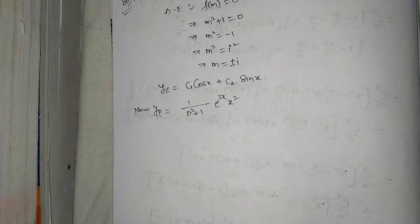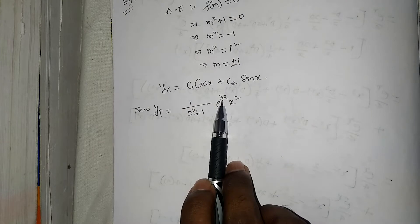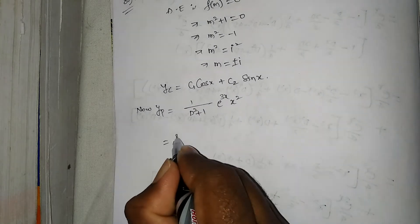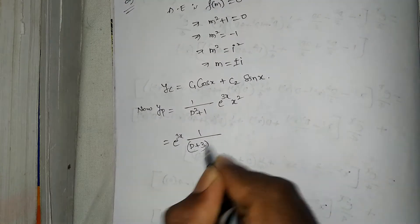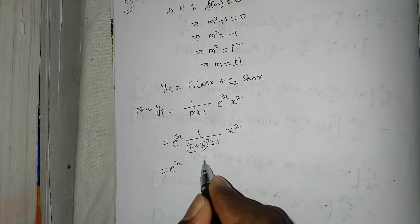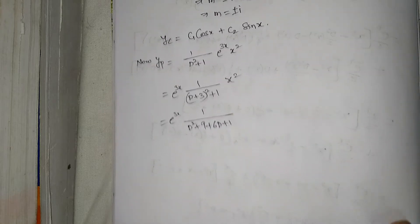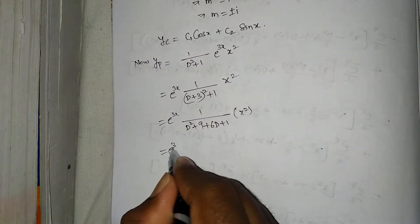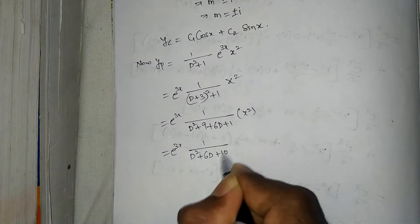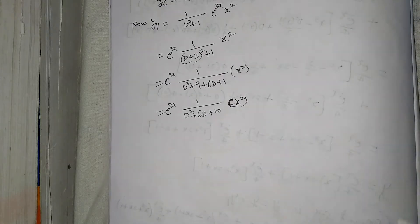Using the e^(ax)·V formula, replace D with D+3: yp = e^(3x) · 1/((D+3)² + 1) · x² = e^(3x) · 1/(D² + 9 + 6D + 1) · x² = e^(3x) · 1/(D² + 6D + 10) · x².